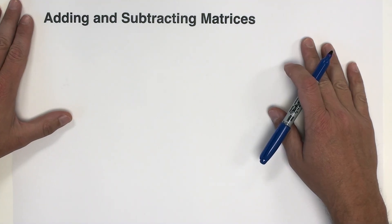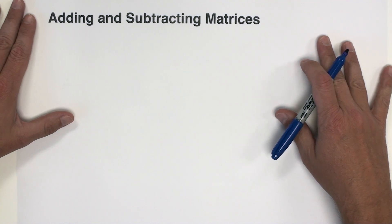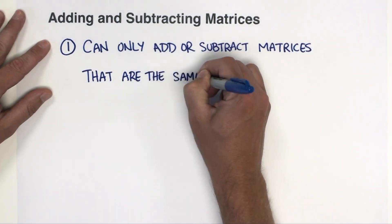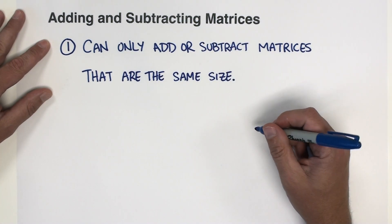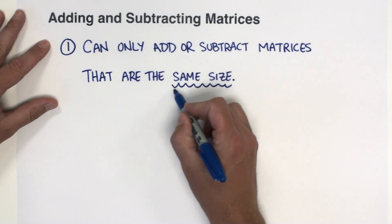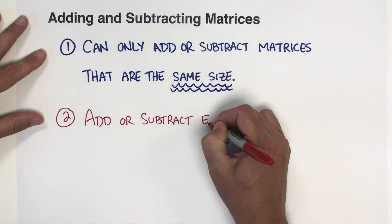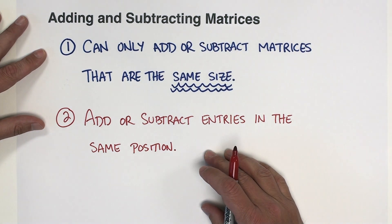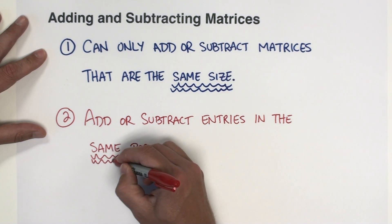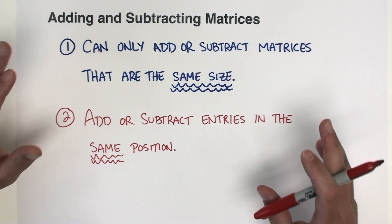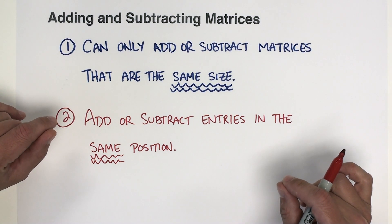Next we're going to talk about adding and subtracting matrices. There are a couple of important things to note. First, you can only add or subtract matrices that are the same size — if the dimensions are not the same, you cannot add or subtract them. Second, when adding or subtracting matrices, you add or subtract the entries that are in the same position. If they're not in the same location, you cannot add or subtract those numbers. Let's do a couple of examples.